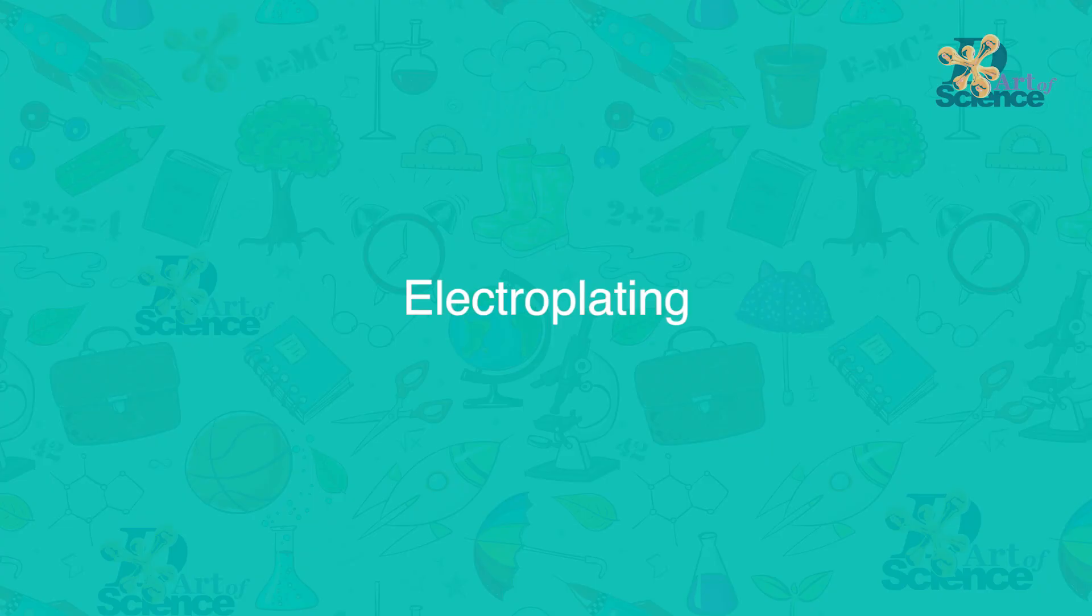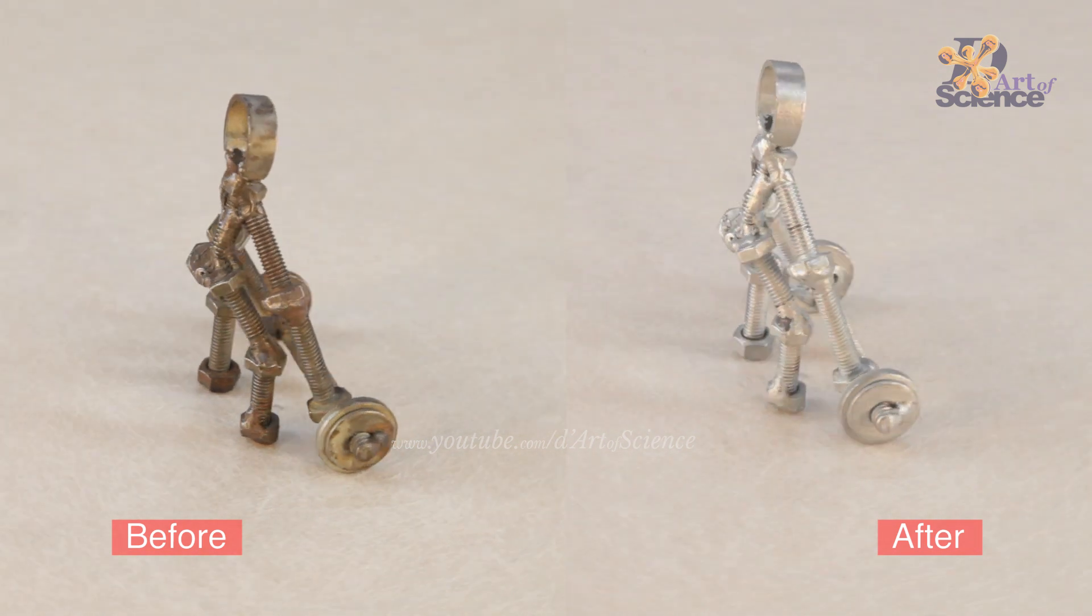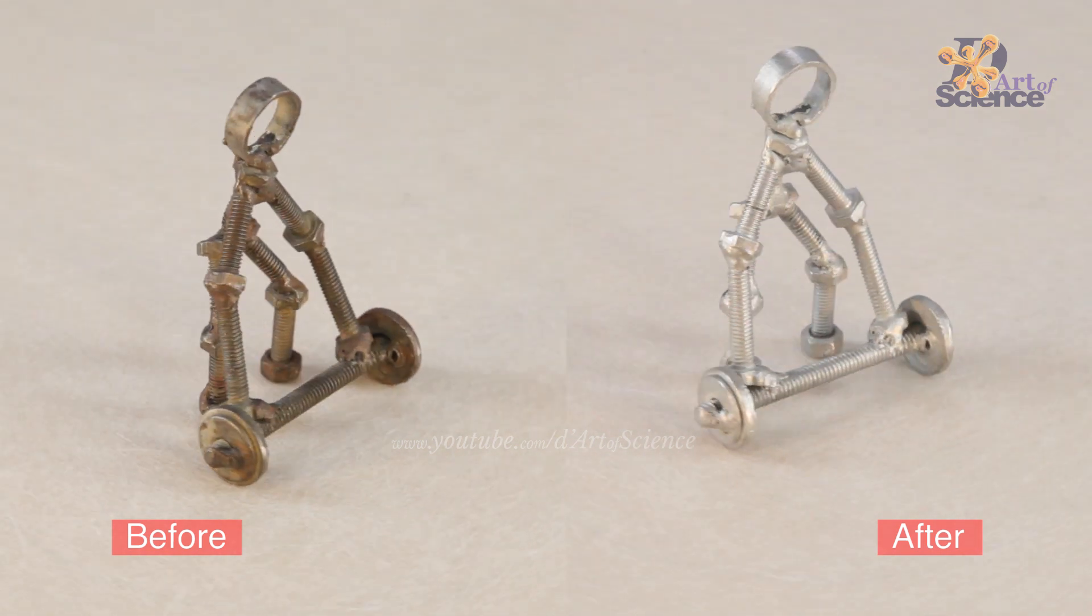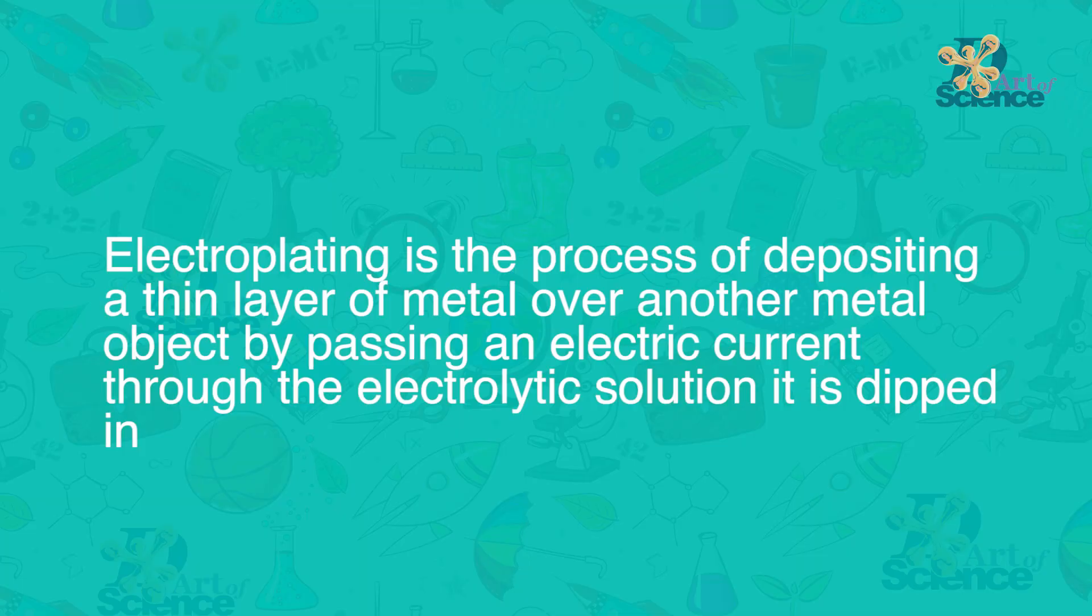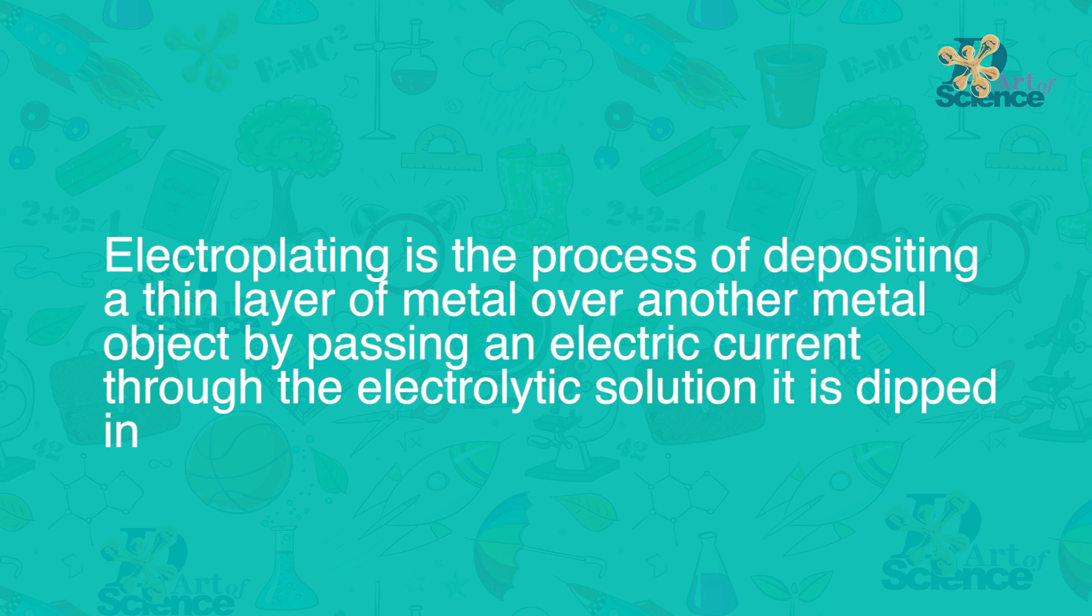Electroplating is self explanatory. Electro is where electric current is involved. Plating is when a thin layer of metal covers another material, mostly metal. Therefore, electroplating is the process of depositing a thin layer of metal over another metal object by passing an electric current through the electrolytic solution it is dipped in.